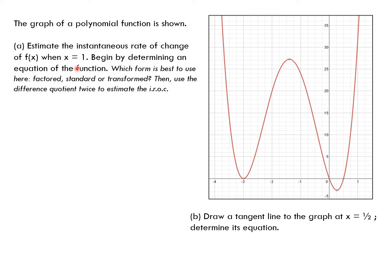We're going to first start by determining an equation of the function. Looking at part b, we're going to draw a tangent line at a different point. But if I just drew a tangent line at x=1 here, I'd be getting an answer with a large margin of error from drawing the line myself. So let's try to do it algebraically — let's get an equation of the function first. Which form is best used? Factored, standard, or transformed? Transformed form has a vertex, but this is a quartic — degree four. The quartic is not the simple U-shape, so we're not going to use transformed form.